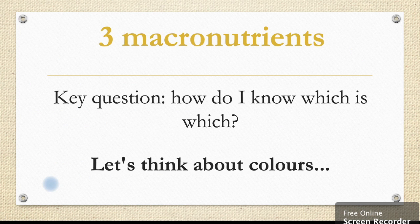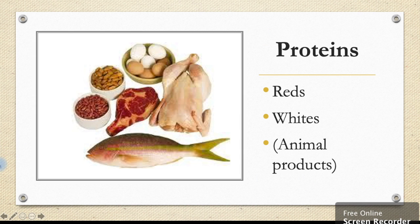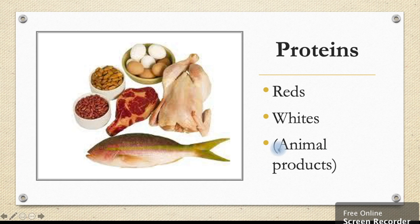So those are the three macronutrients. But the key question is how do you know which one is which? Let's have a think about colours. For proteins, if we look at this picture we can see a lot of reds and a lot of whites. This is a helpful hint when you're looking at food to determine if it contains protein. Another tip is if it's an animal product it always contains protein.